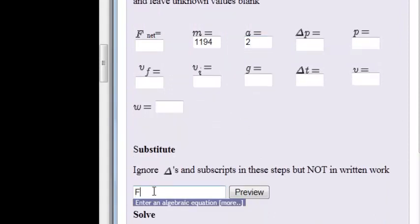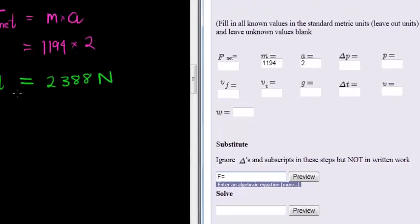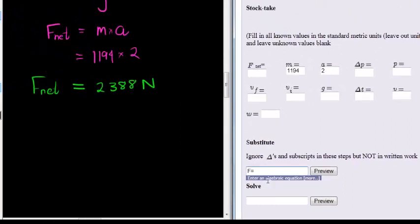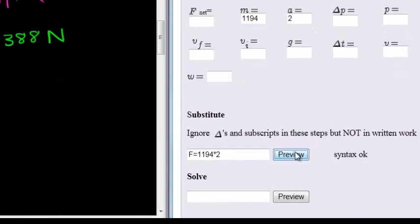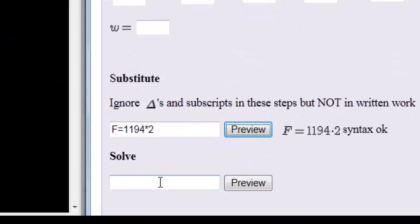Okay, just read here, they tell us to ignore delta as in subscript, so I'm not going to type in F_net, I'm simply going to type in F. Don't leave it out in your written work. So look, when I wrote it down I kept my net there, but in this step inputting it here we'll leave out net as a subscript. So force is equal to 1194 times 2, looks good. Let's solve it.